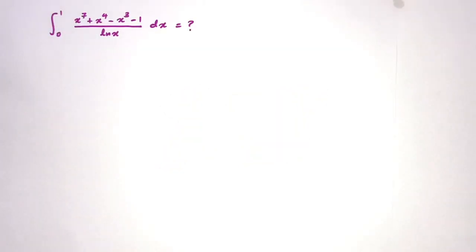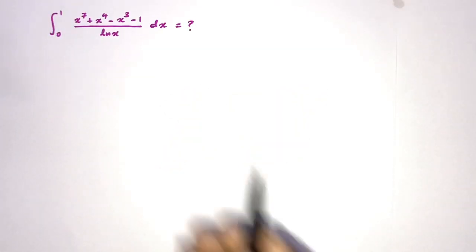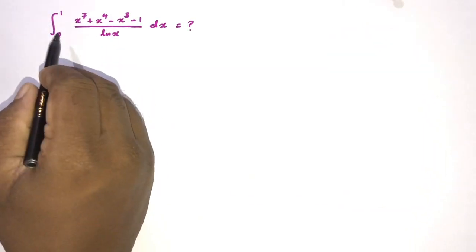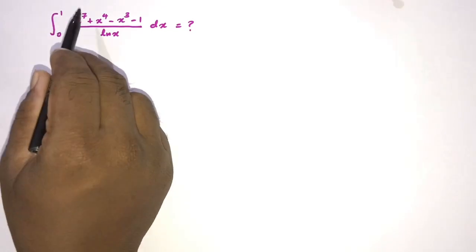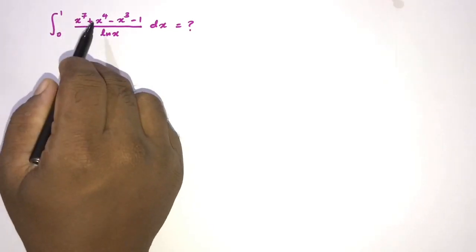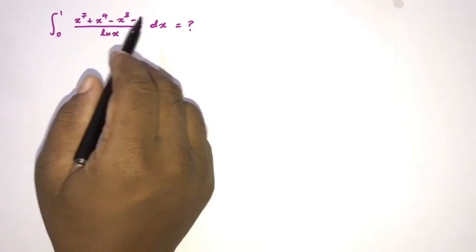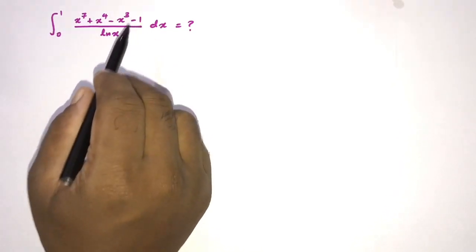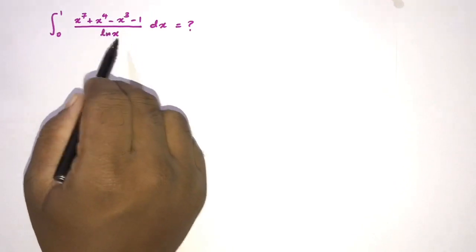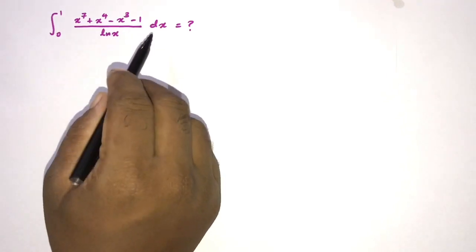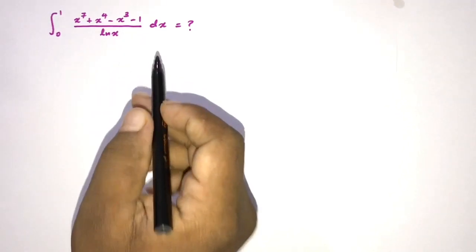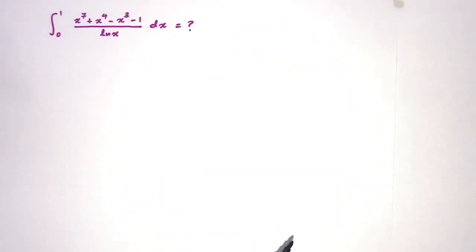Hi, today we have another interesting integral: the integral from 0 to 1 of (x to the 7th plus x to the 4th minus x cubed minus 1) over natural log of x, dx. I will explain my method here.